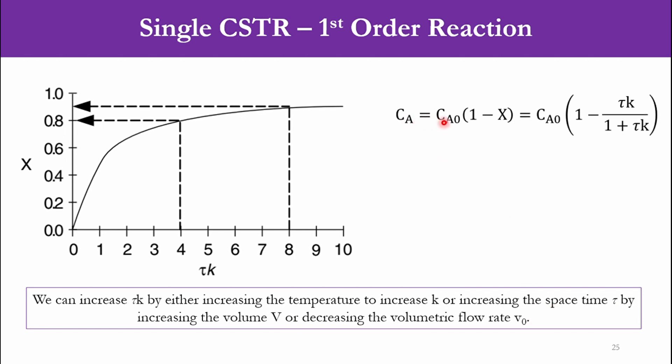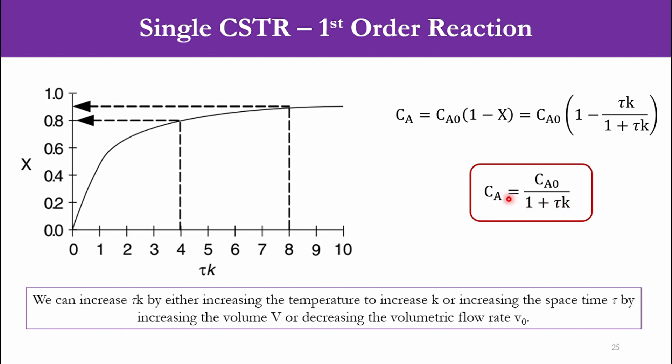Substituting X equals tau·K over (1 + tau·K) into CA equals CA0·(1−X), we get CA equals CA0 over (1 + tau·K). So tau·K has an inverse relationship with CA — with increasing tau·K, the concentration of A decreases at the reactor outlet, which is expected as more A is converted to B, confirming that more conversion has taken place.